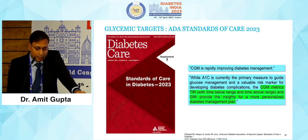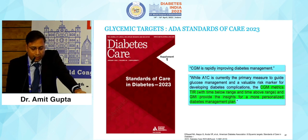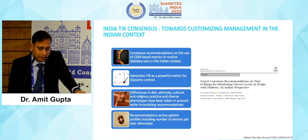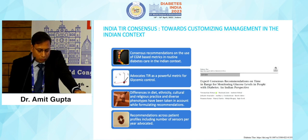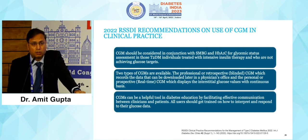The ADA standard of care 2023 states that CGM metrics and GMI provide insight for a more personalized diabetes management plan. The Indian TIR consensus paper discusses recommendations on the use of CGM-based metrics in routine diabetes care in the Indian context, advocating TIR as a powerful metric for glycemic control, with a recommended number of sensors per year. The RSSDI 2022 clinical guidelines also address CGM use in clinical practice.